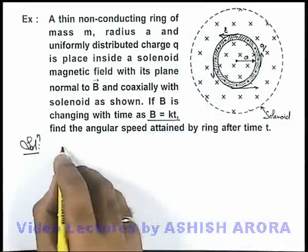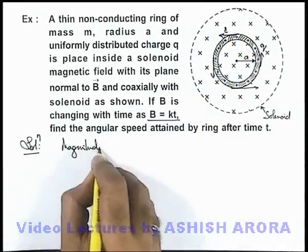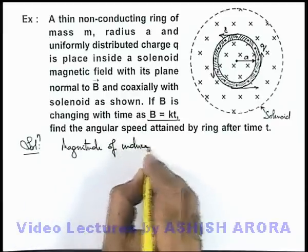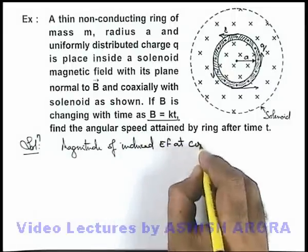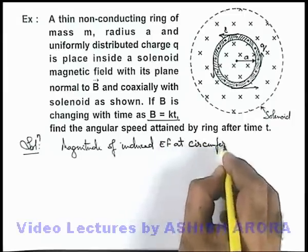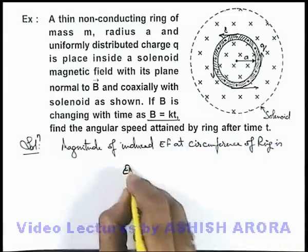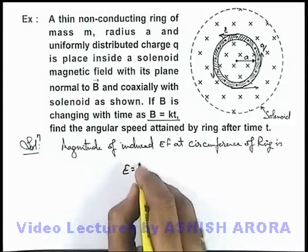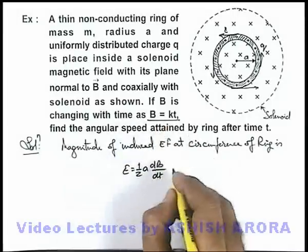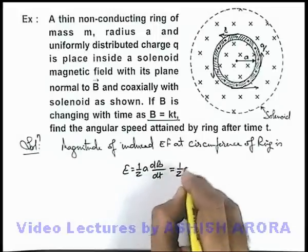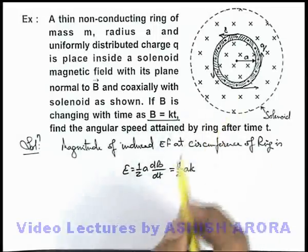And here we can directly write the magnitude of induced electric field at circumference of ring. This can be directly given as E equals half a dB/dt, and in this situation the value of dB/dt is k, so it'll be half ak. That is the electric field induced at the circumference.